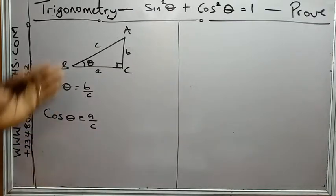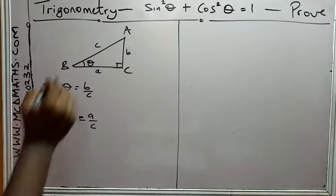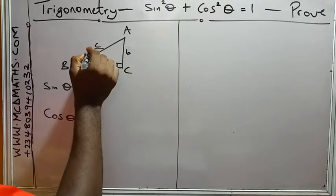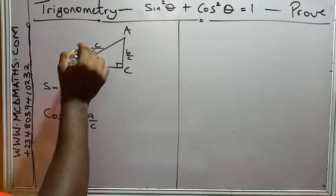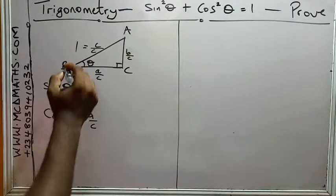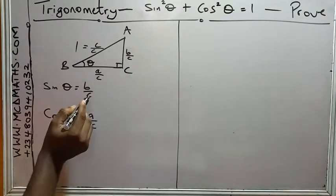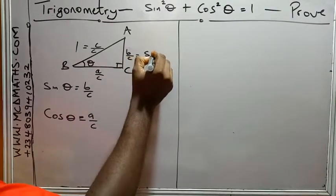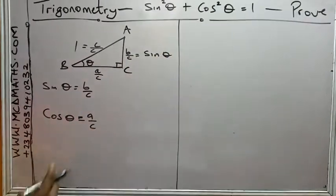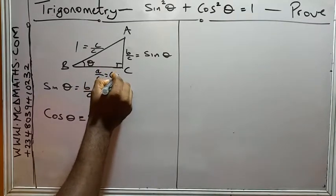The second step is, let's try to make the hypotenuse 1. Now, to make the hypotenuse 1, you decide to divide by c. So, you also divide this by c, and divide it by c. Now, c divided by c is 1. So, this is 1, this is b over c, and this is a over c. Now, b over c, you already know that b over c is sine theta, so we can say this is the same thing as sine theta. Then, a over c is the same thing as cos theta. So, this is the same thing as cos theta.